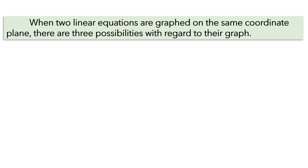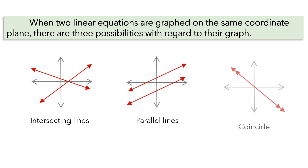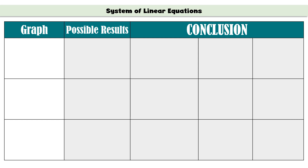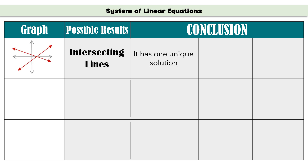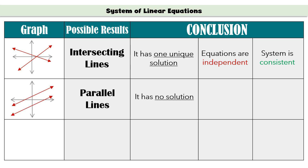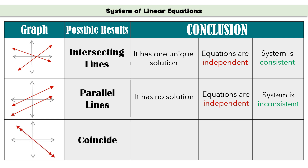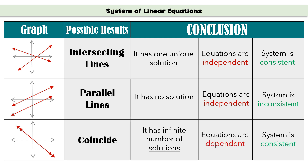When two linear equations are graphed on the same coordinate plane, there are three possibilities. The lines can be intersecting, parallel, or coinciding. For intersecting lines, there is one unique solution — the equations are independent and the system is consistent. For parallel lines, there is no solution — the equations are independent but the system is inconsistent. For coinciding lines, there are infinite solutions — the equations are dependent and the system is consistent.